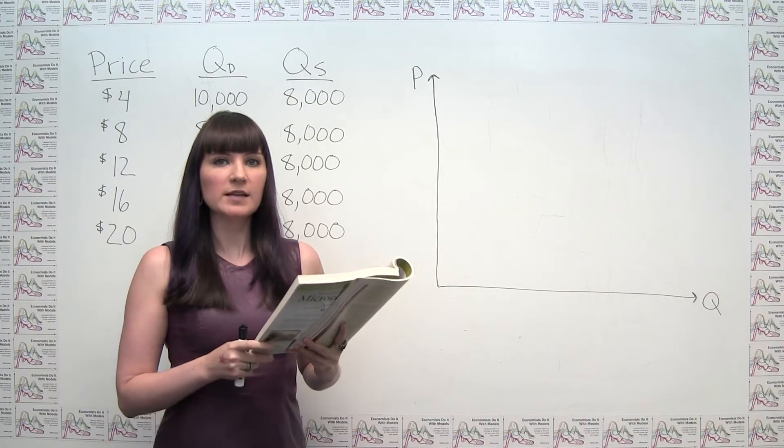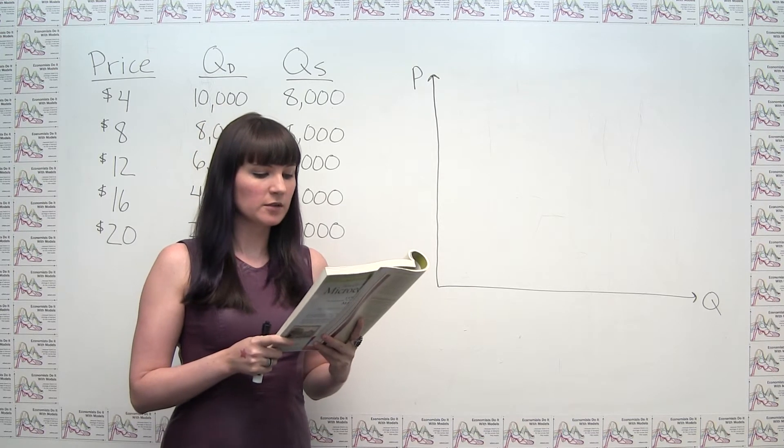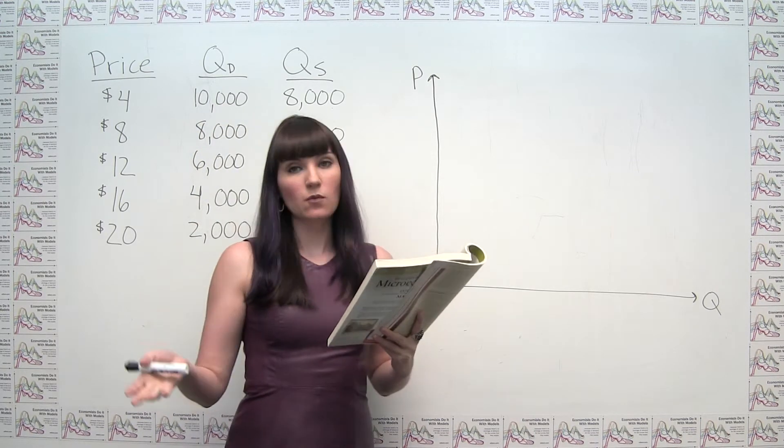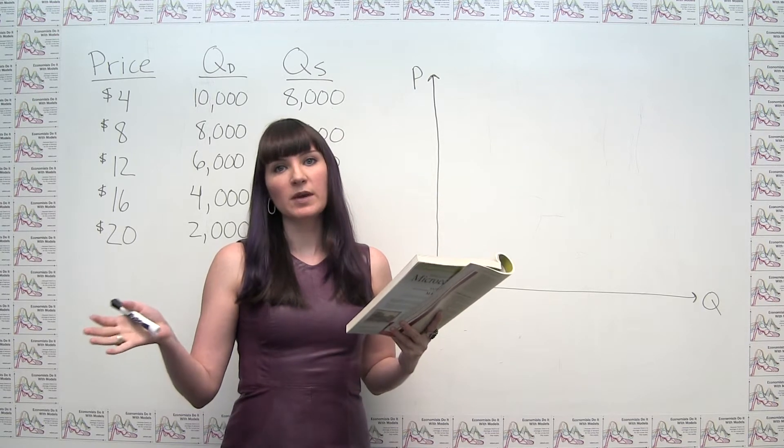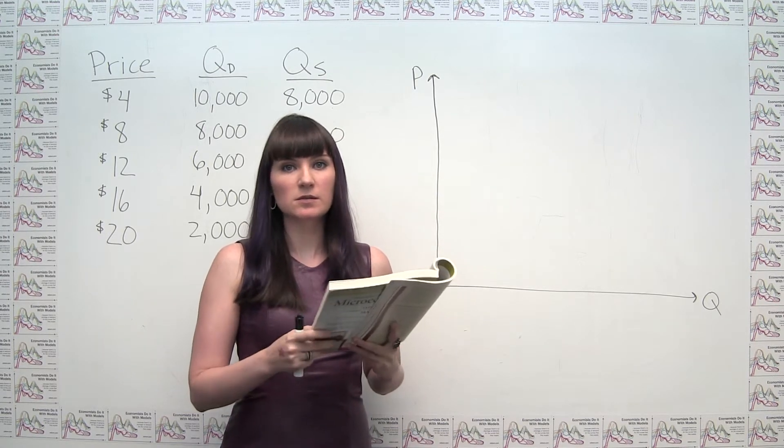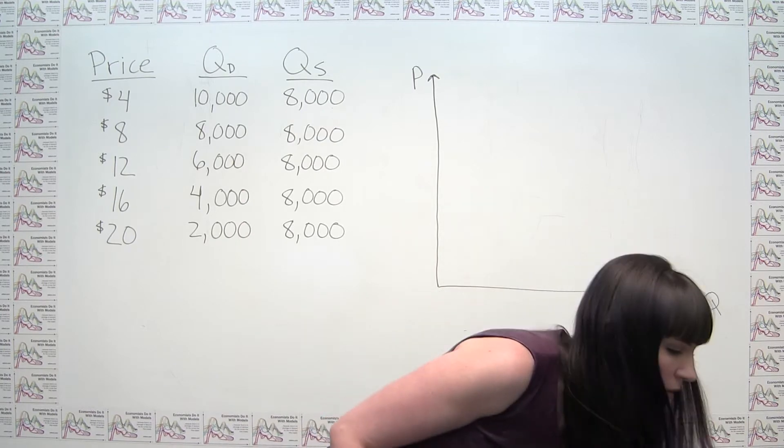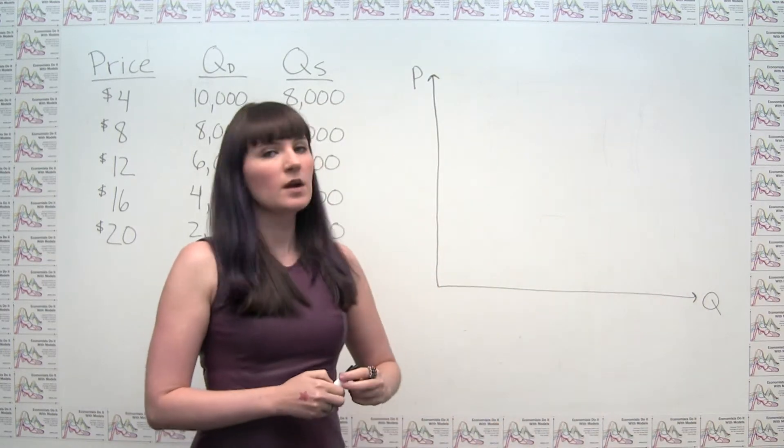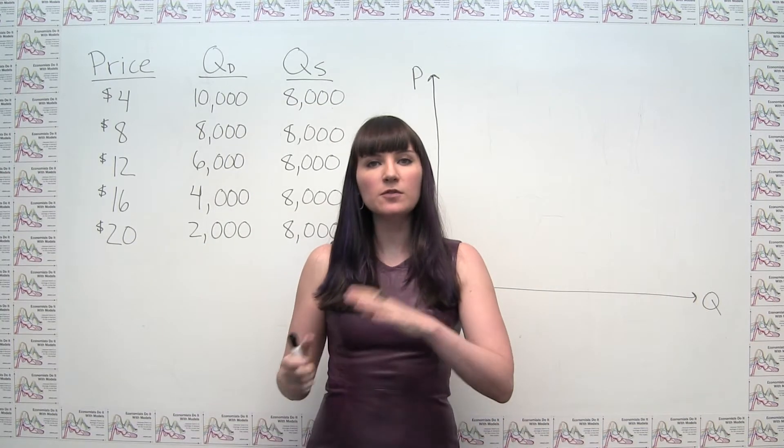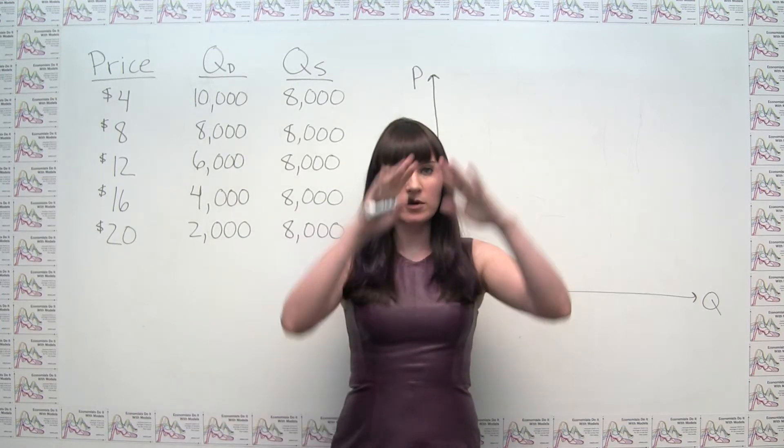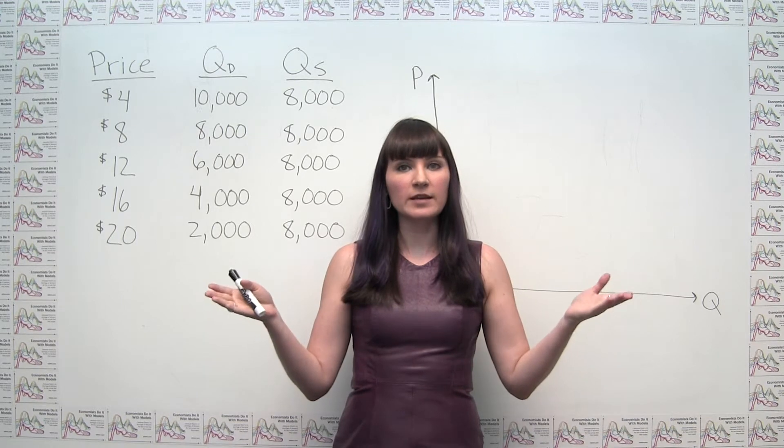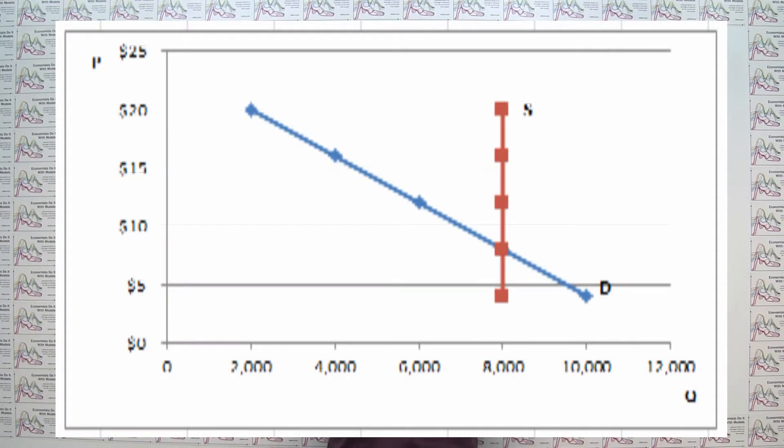Part A of the question asks us to draw the demand and supply curves and also asks what is unusual about this supply curve and why might this make sense in this particular instance? So let's think about this. Now, I'm going to cheat a little bit here. I'll give you a to-scale version of the demand and supply curves. I'll put a little Excel overlay here. Let's pause and look at that for a second.